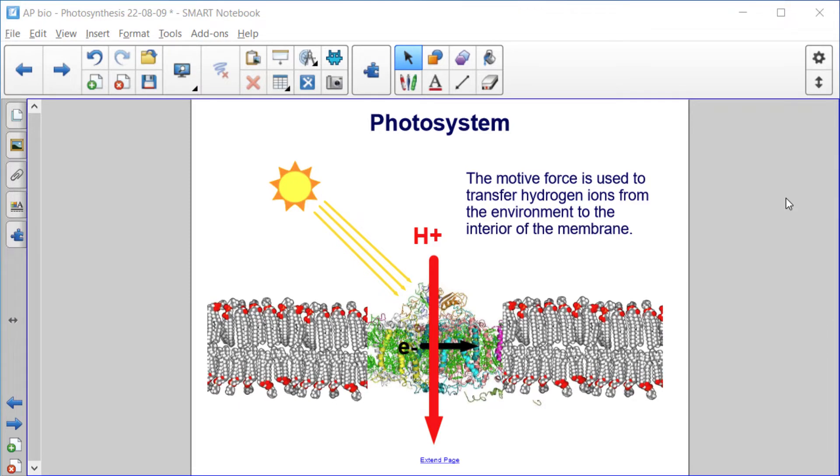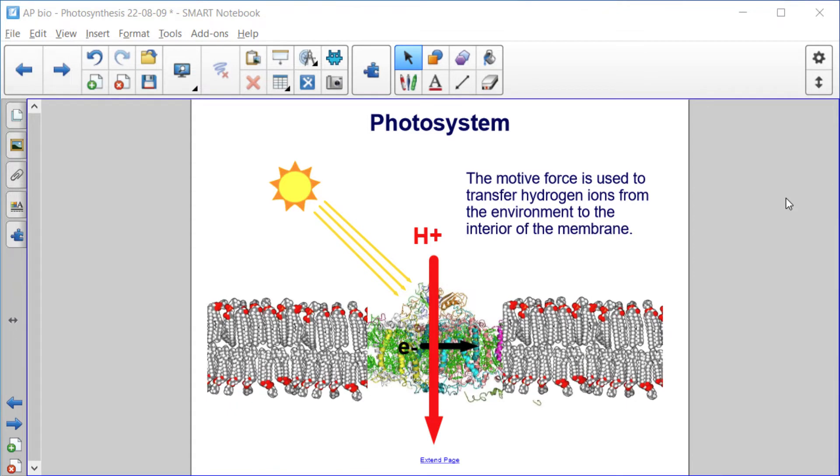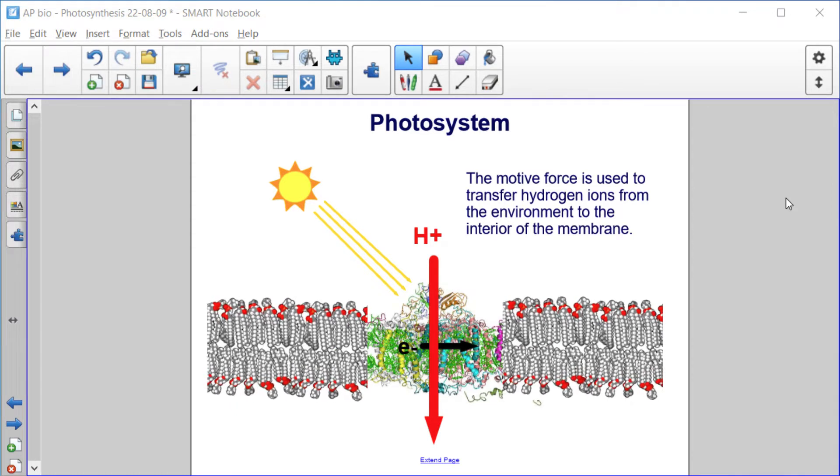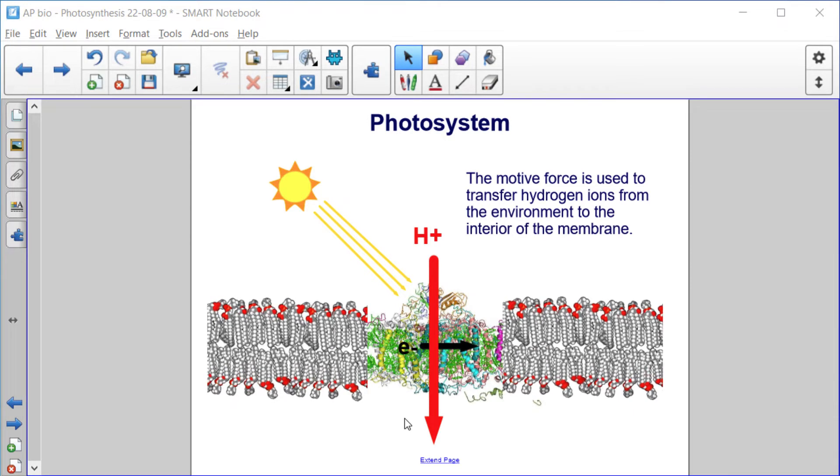The proton motive force is a combination of a difference in proton concentrations across the membrane and the resulting electrical potential from that. So that motive force is used to transfer hydrogen ions from outside to inside.